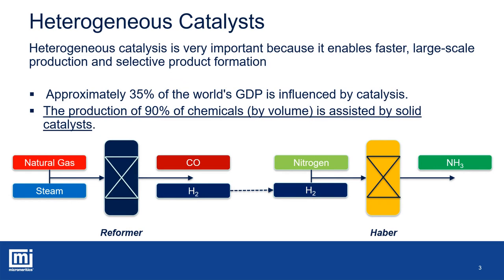Today's chemical and energy industry could not exist without catalysts. About 35% of the world's gross domestic product is directly influenced by the use of catalysts, and almost 90% of the volume of all chemical products is made by exploiting catalytic processes. For instance, 48% of worldwide hydrogen used in synthesis gas is produced by the catalytic steam reforming of methane. Ammonia, an important component in fertilizers production, is synthesized by the Haber-Bosch process using metal-based catalysts. In 2016, 144 million tons of ammonia were produced.